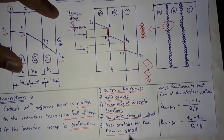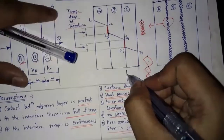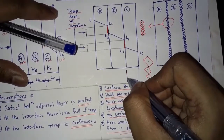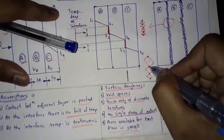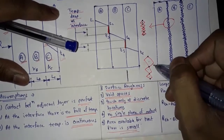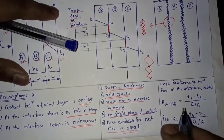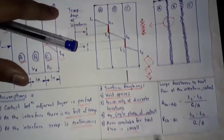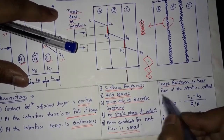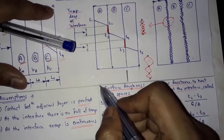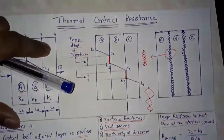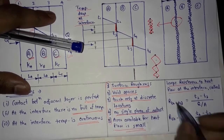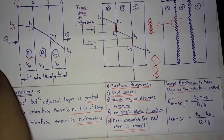The area available for heat flow is small. In an ideal situation, the full area is available for heat flow, but in real heat transfer there are void spaces between the contacts. Because of this, there is a very small area available for heat flow, resulting in large resistance to heat flow at the interface. This is called thermal contact resistance.